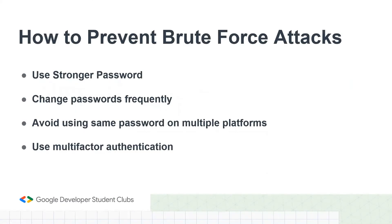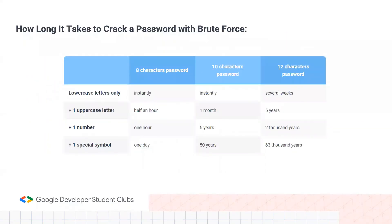Now we're going to see how to prevent a brute force attack and keep yourself safe. First, use a strong password: make it very long and include uppercase letters, lowercase letters, numbers, and a special symbol. Also change your password frequently and avoid using the same password on multiple platforms, because if a hacker finds the password to one account they'll try it on your email and gain control of everything. Also enable multi-factor authentication — even if the hacker has your password, they'll need a second authentication like a fingerprint or a PIN sent to your phone.